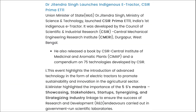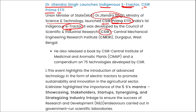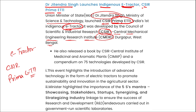Dr. Jitendra Singh, Union Minister of State in the Ministry of Science and Technology, has launched CSIR Prima ET-11, India's indigenous e-tractor. It was developed by CSIR (Council of Scientific and Industrial Research) through their department CSIR-CMERI, the Central Mechanical Engineering Research Institute in Durgapur, West Bengal. The launch highlights the introduction of advanced electric tractor technology to promote sustainability and innovation in the agriculture sector. The minister also highlighted the importance of the 5S mantras: showcasing, stakeholders, startup, synergizing, and strategizing industry.